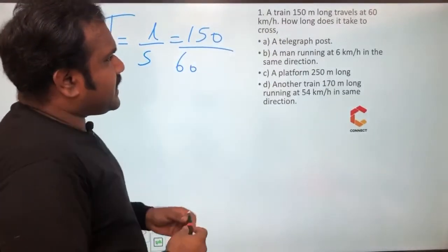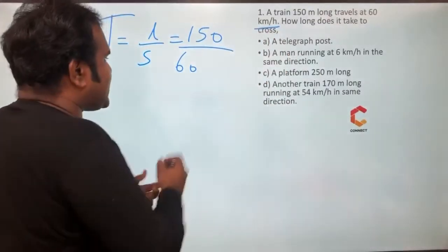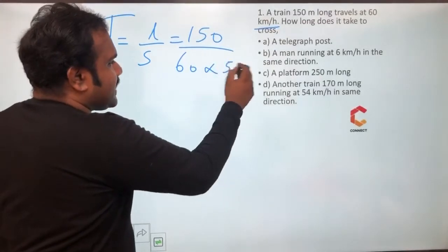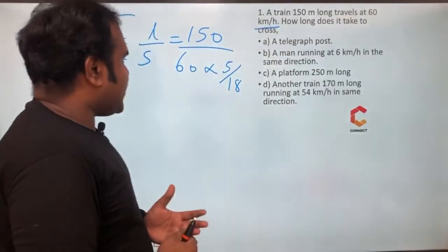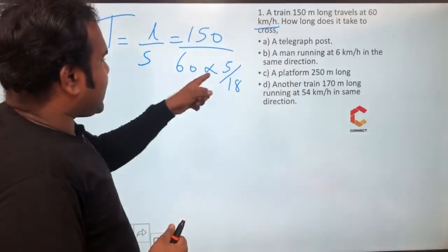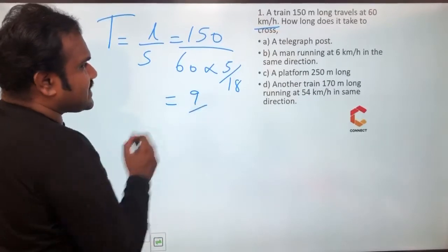Remember, the speed is given in km per hour. So we have to convert it into meter per second. So 60 into 5 by 18, 5 by 18, 60 into 5 by 18. So 150 by 300 gives you 1 by 2, 18 by 2, so answer is 9 seconds.